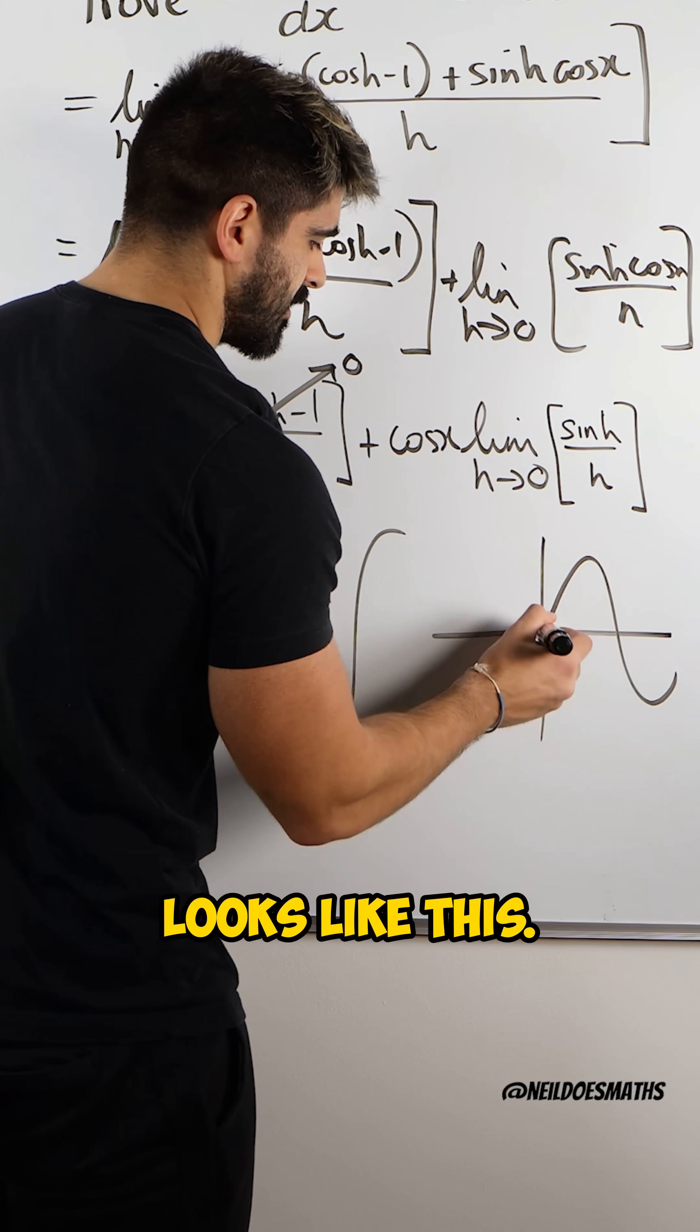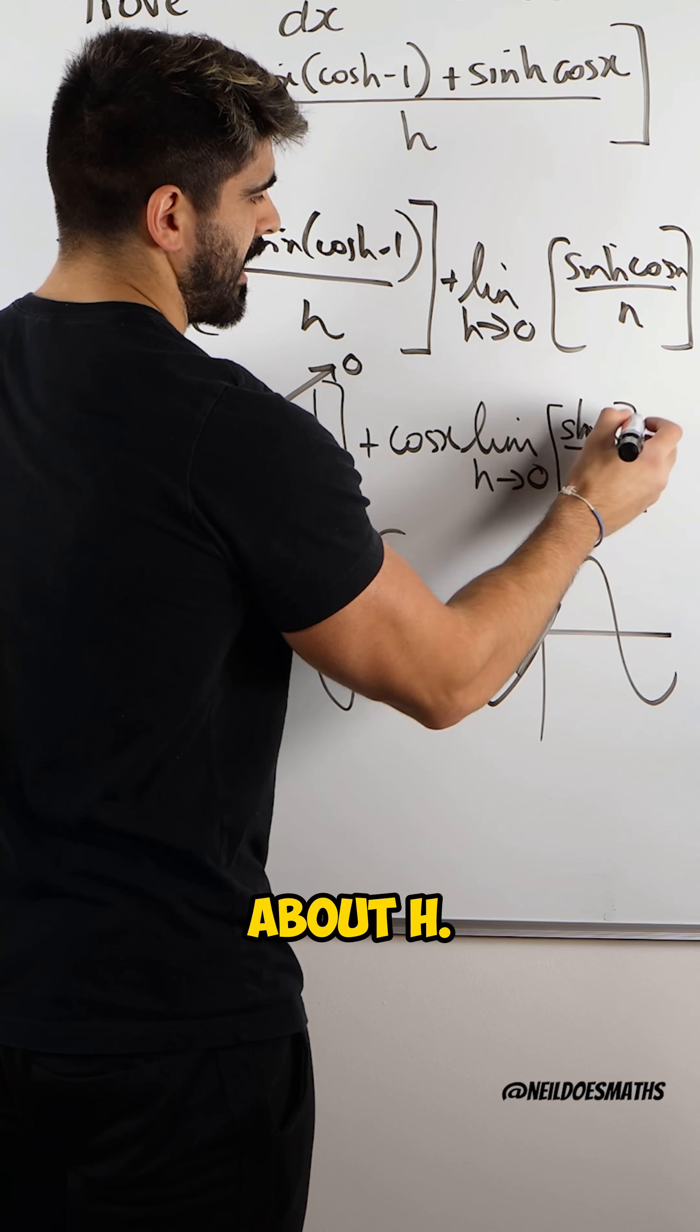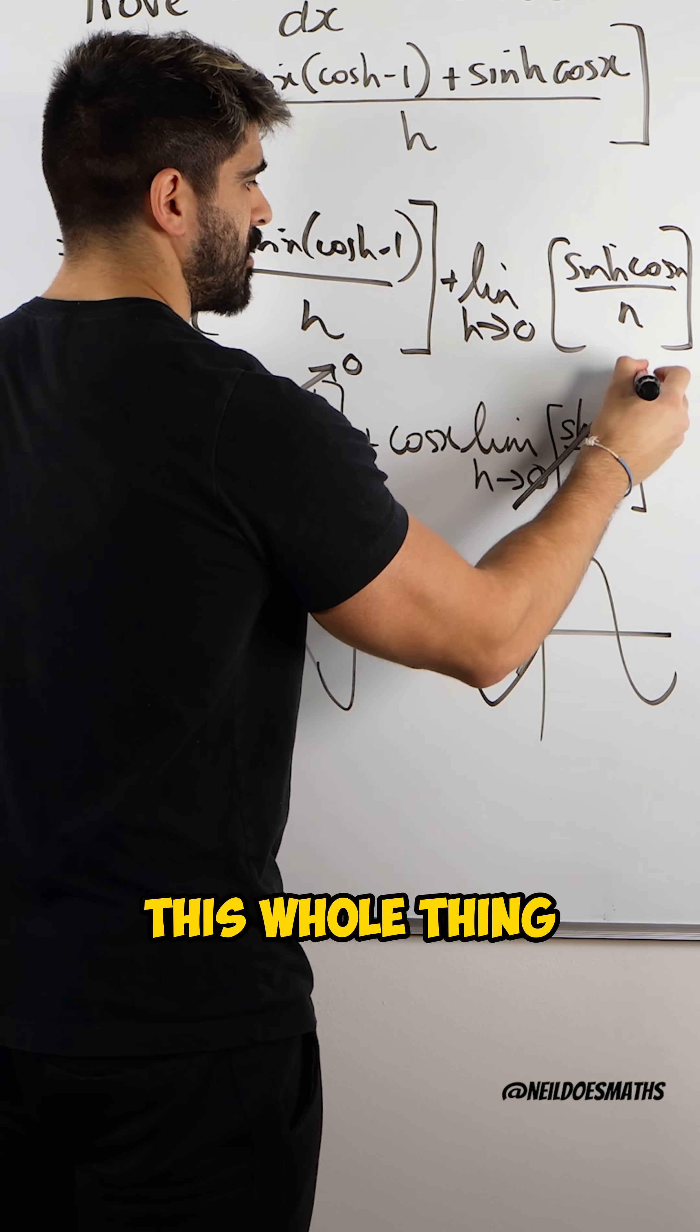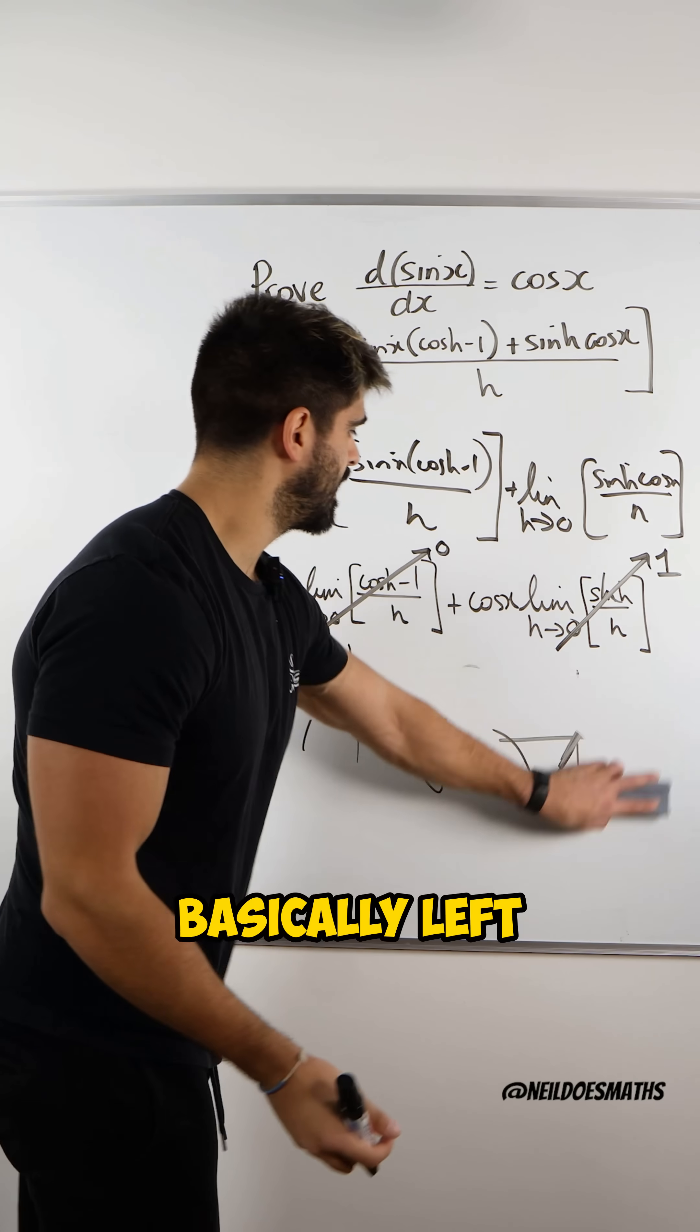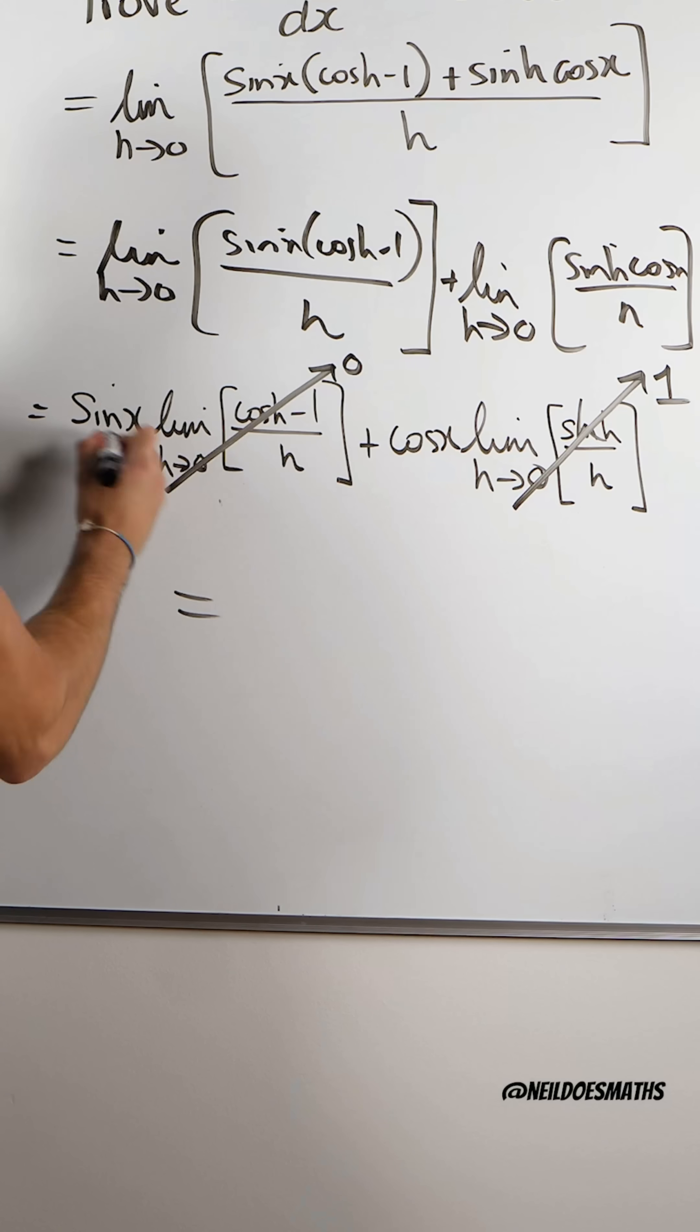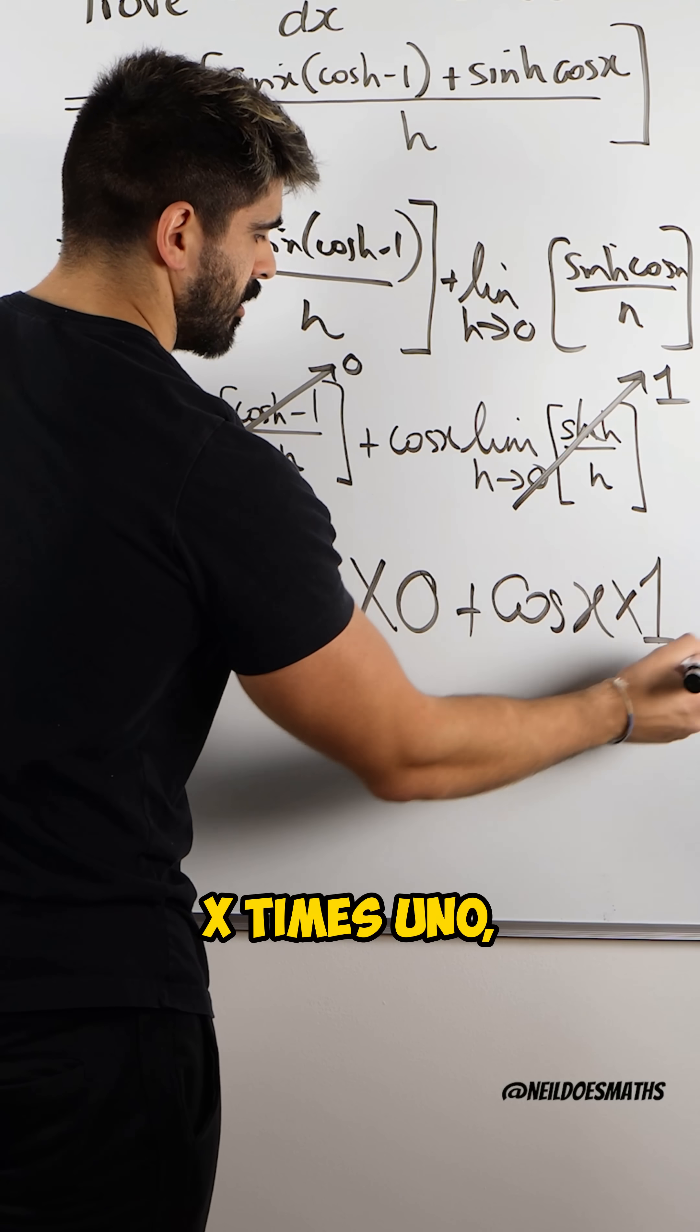With the sine graph, which looks like this, for small values it's about h. It's a straight line. So this is about h. h over h is one. This whole thing is about one.